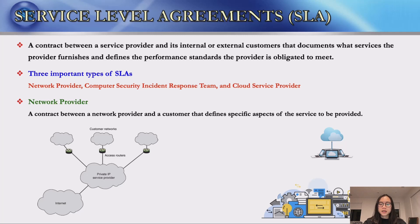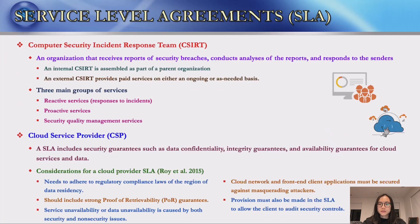A network SLA is a contract between a network provider and a customer that defines specific aspects of the service to be provided. A network SLA typically includes information such as a description of the nature of service to be provided, the expected performance level of the service, and the process for monitoring and reporting the service level. The figure on this slide shows a typical configuration for a network SLA.